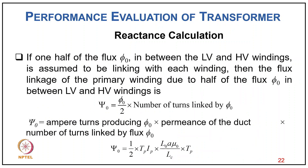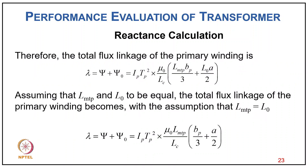If half of the flux φ₀ between LV and HV windings links with each winding, then the flux linkage of the primary winding due to half of φ₀ is ψ₀ = (φ₀/2) × Tp = (Ip×Tp/2) × (L0×μ₀/Lc) × Tp. Therefore, the total flux linkage of the primary winding is λ = ψ + ψ₀ = Ip×Tp² × (μ₀/Lc) × [LMTp×bp/3 + L0×a/2], where a is the duct width.